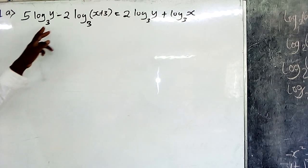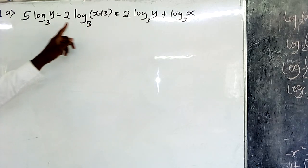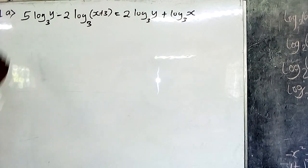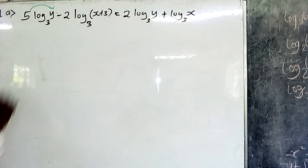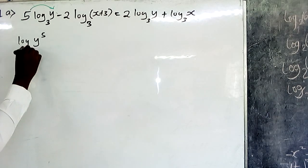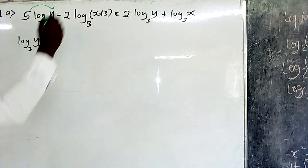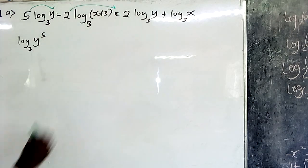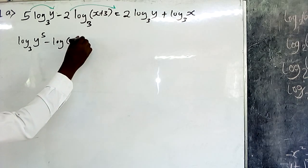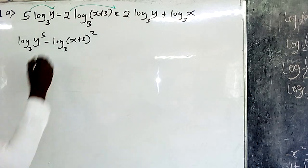The first thing with problems involving logarithmic equations: we must ensure that we have the same base all through. After ensuring the same base, the next step is to get rid of the coefficients. So this coefficient of 5 becomes the power, giving us log₃(y⁵). This coefficient of 2 becomes the power, so we have minus log₃((x+3)²).